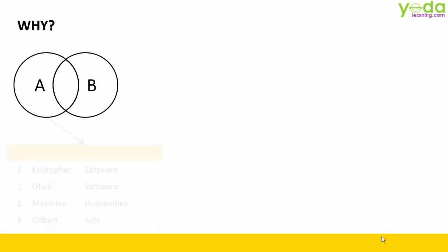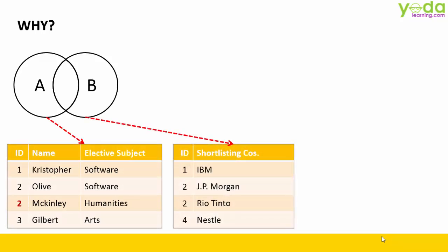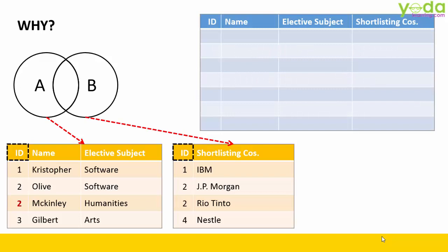Suppose you have a table with names of people and what subjects they have taken while studying in college. Next, there's a list of companies who have shortlisted candidates for an interview. When you wish to combine these tables, you would want to know what kind of output would be generated based on the ID. To understand the different variations is the reason why we learn Joint Types. For Excel users, it's as simple as VLOOKUP.